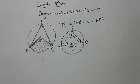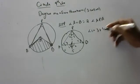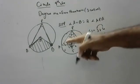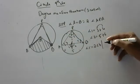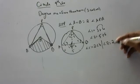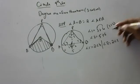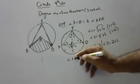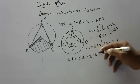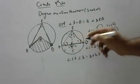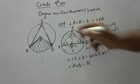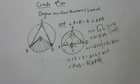Same as before: angle 1 equals angle 3 plus angle 4, angle 2 equals angle 5 plus angle 6. Angle 1 can be written as 2 times of angle 4, angle 2 as 2 times of angle 5, because angles 3 and 4 are equal and angles 5 and 6 are equal — based on the isosceles triangle property. So angle 1 plus angle 2 equals 2 times of angle 4 plus 2 times of angle 5. Therefore AOB equals 2 times APB. Hence proved.